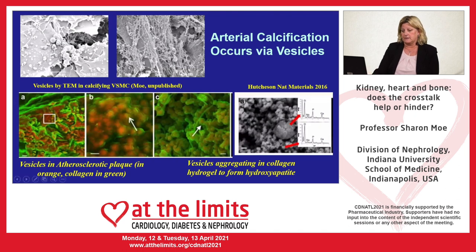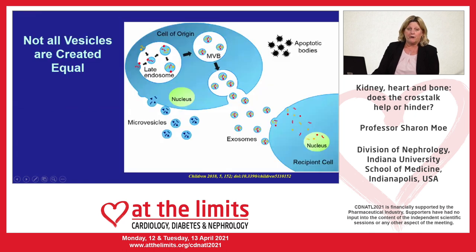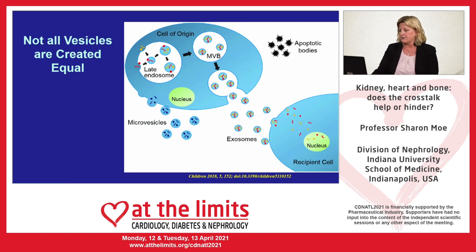Arterial calcification also occurs via vesicles. These are cultured vascular smooth muscle cells where matrix vesicles are added — you can see they attach and adhere to the collagen where they will rupture and deposit mineral. Dr. Hutchinson has done beautiful work in atherosclerotic plaques showing these vesicles conglomerate, shown in orange, in areas of collagen shown in green, and has replicated this in collagen hydrogels showing it actually forms hydroxyapatite. Not all vesicles are created equal — cells can secrete exosomes, multivesicular bodies, microvesicles, and even apoptotic bodies. All of these types of vesicles have been identified in areas of vascular calcification but differ in content and regulation.